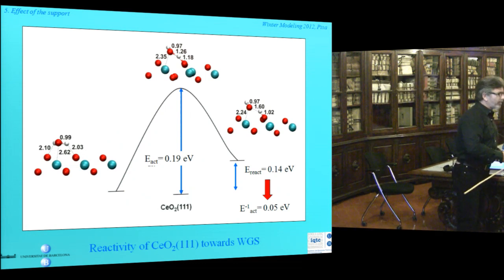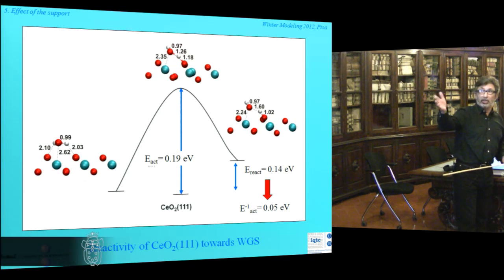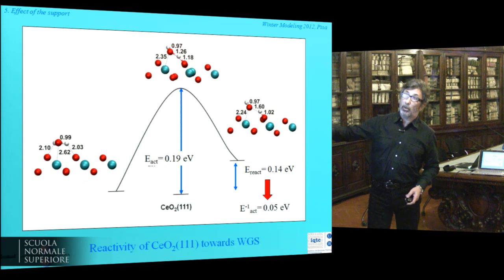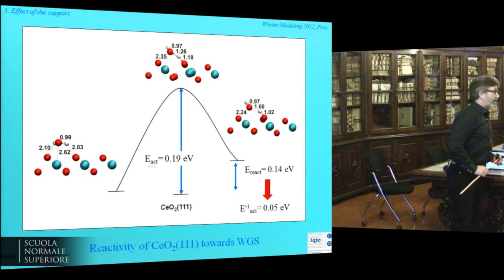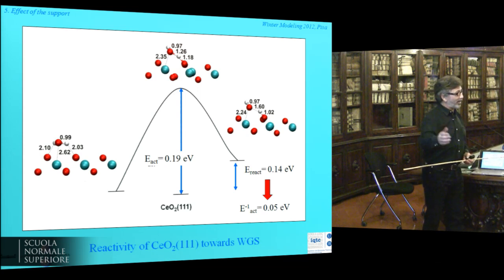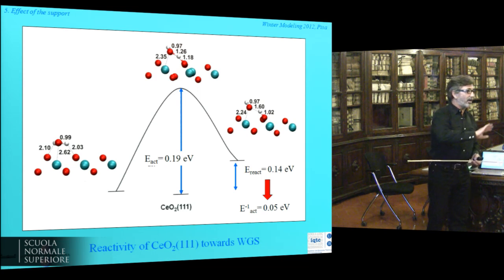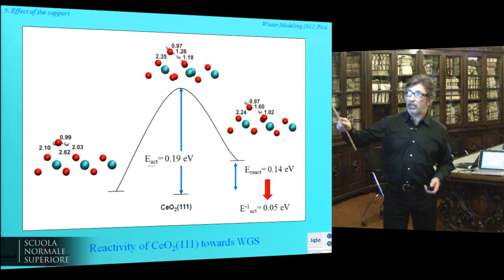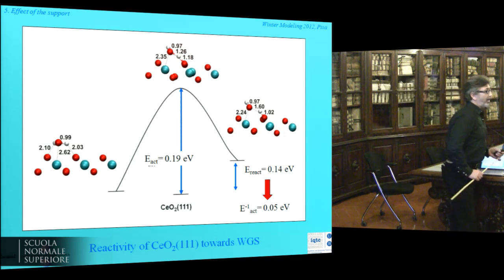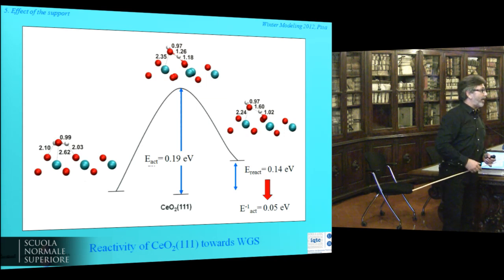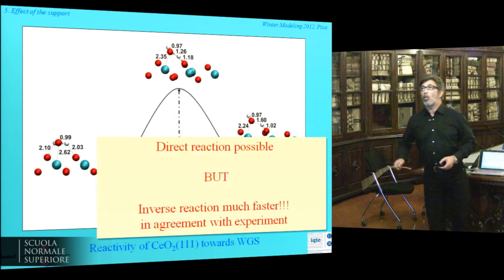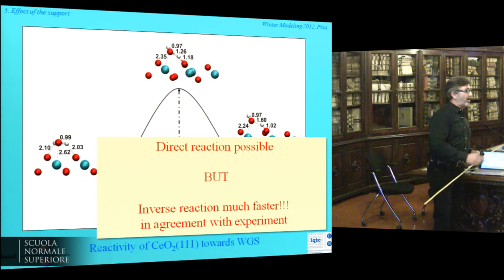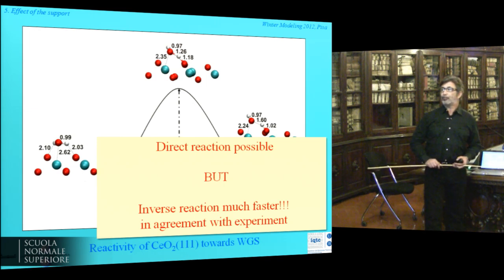What happens when you put water on the CeO2 111 surface? There is an energy barrier, and it is rather small, so water should dissociate on this surface — but experimentally it is not found. The reason is that when you look at this, the back reaction has an even smaller energy barrier, meaning molecules that get dissociated recombine faster than they dissociate. This is why water dissociation is not observed in experiment unless there is metal supported on the ceria.